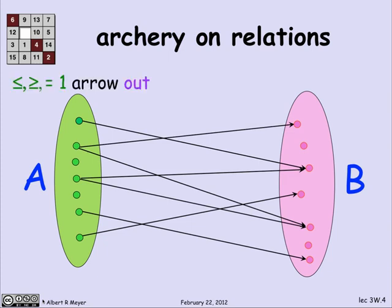Well, the general idea of archery or relations pursues this function idea that basically we're going to classify relations according to, first, how many arrows come out of domain elements, really in three categories. The relations where there's at most one arrow out of every domain element, there's exactly one arrow out of every domain element, or there's at least one arrow out of every domain element.